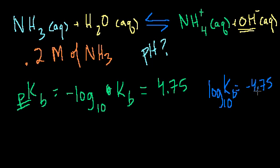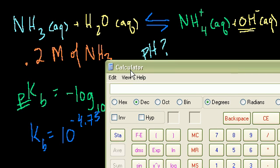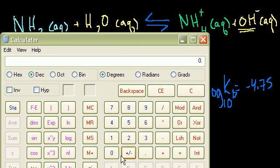That's why the B is there. Is equal to minus 4.75. Or 10 to the minus 4.75 should be KB. So KB is equal to 10 to the minus 4.75. That's not an easy exponent to figure out in your head.